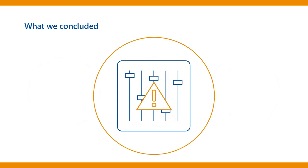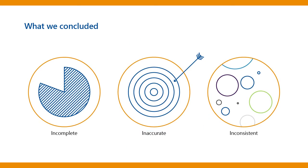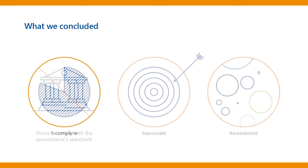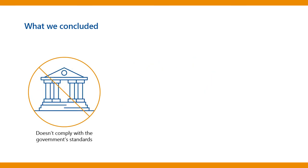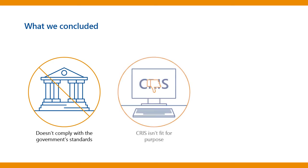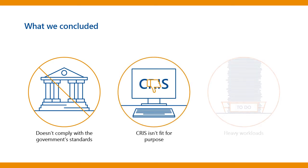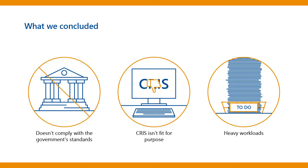We found that the Department doesn't have effective controls to make sure its child protection data is high quality. We found examples of incomplete, inaccurate and inconsistent data in CRIS. This is because the Department doesn't comply with the government's data quality standards, CRIS isn't fit for purpose and its controls don't always work, and staff who use CRIS have heavy workloads, which reduces the time they have to correctly record information.